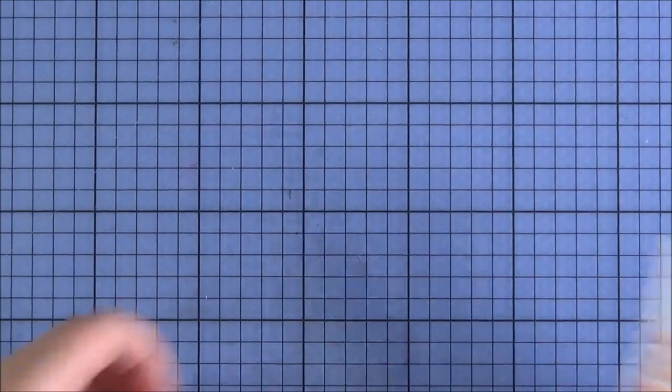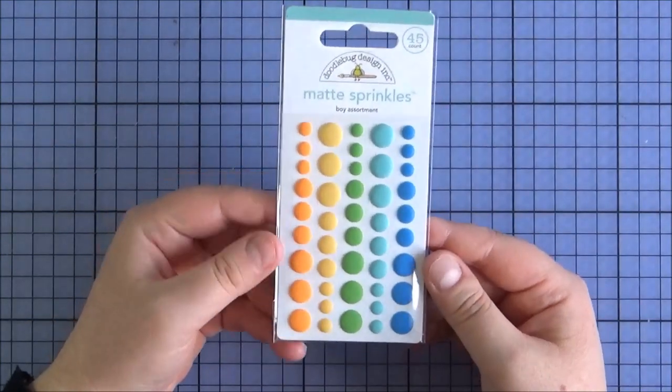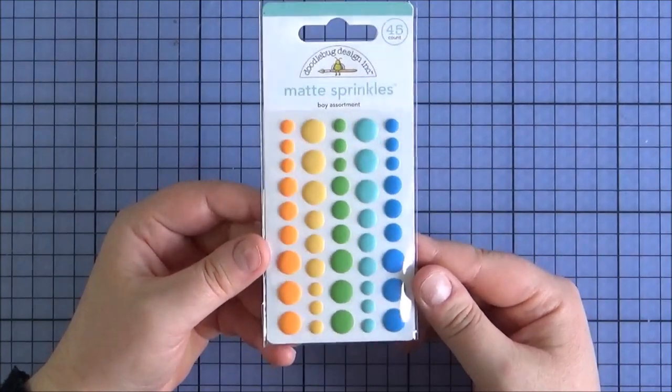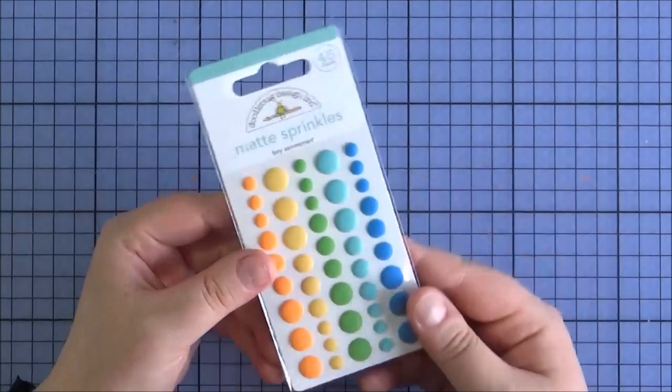And then last but not least, I got a pack of the Matte Sprinkles in the Boy Assortment. This was out of stock when I entered my last order from Simon Says Stamp, so really happy that I got these. I really love this matte finish on these sprinkles.